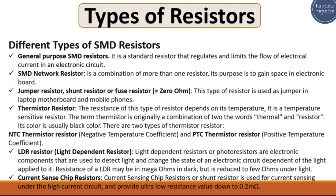The last resistor is the current sense chip resistor, also called a shunt resistor. It is used for current sensing in high current circuits and provides ultra-low resistance values down to 0.2 milli-ohms.